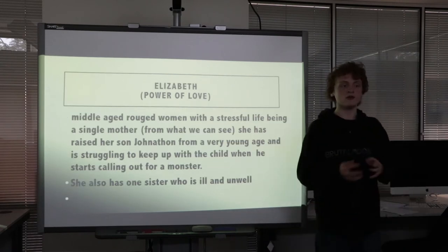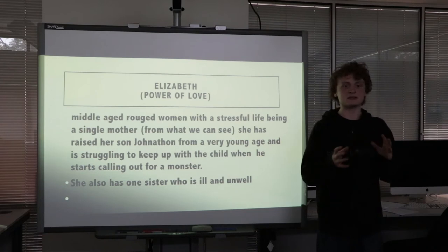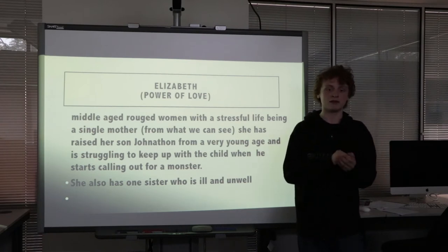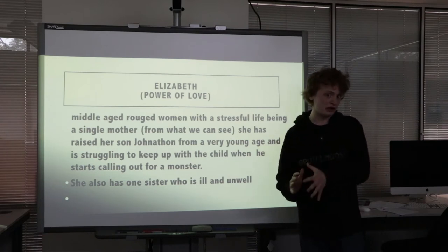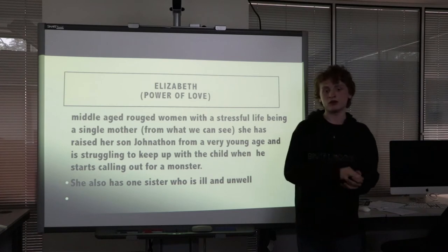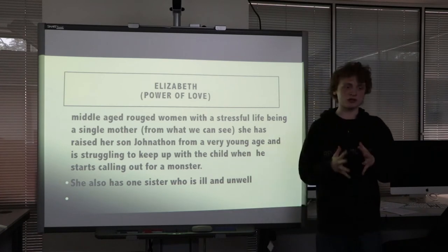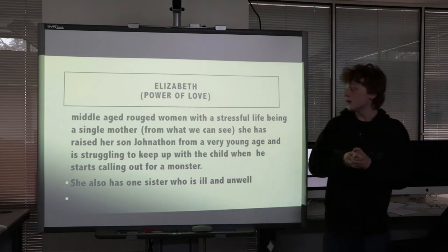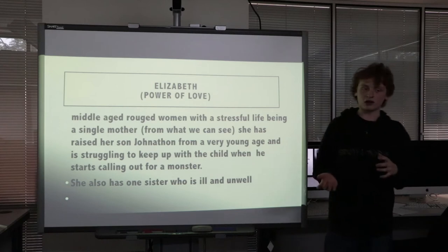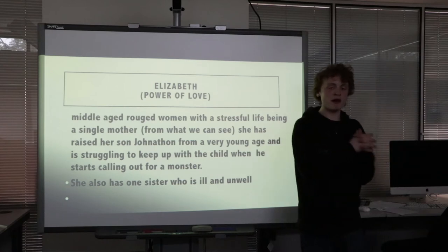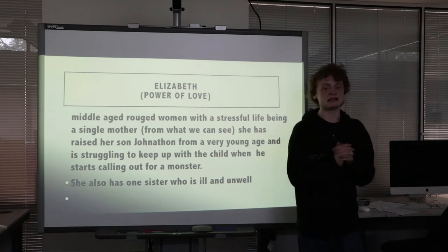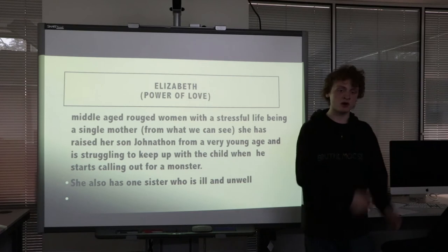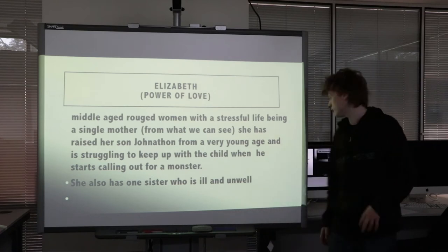Next is Elizabeth. Her power is the power of love — she holds on to Jonathan and needs to keep him close, like a mother bird reluctant to let her chick leave the nest. Elizabeth wants to make sure Jonathan is alright and has to help him out. Her story arc goes from being an overbearing mother to letting him go as she deals with a family emergency, allowing Jonathan to face the threat for himself.